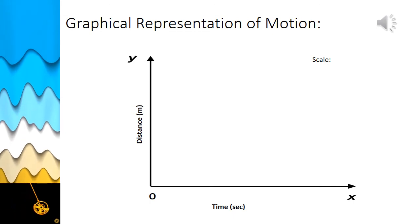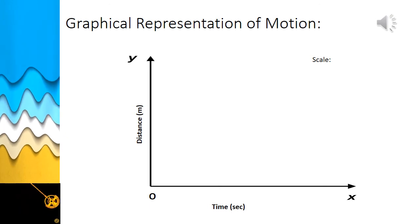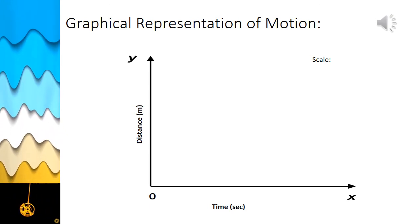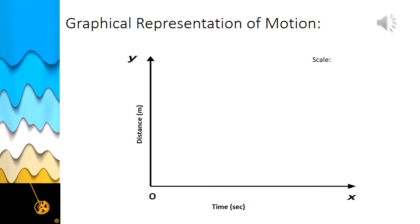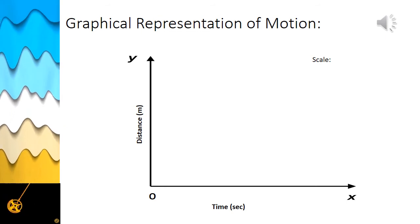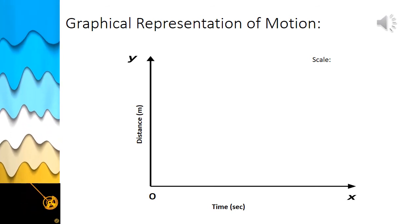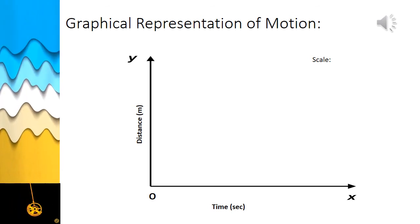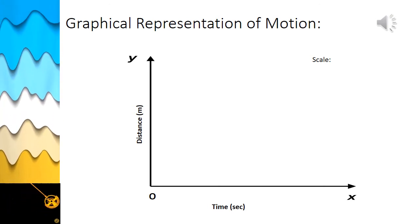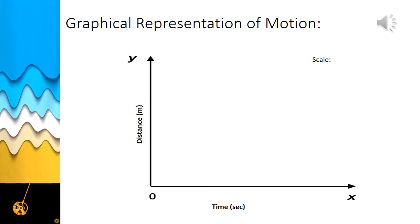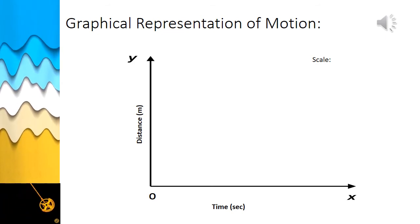Mark the data provided — that is, the distance and time data covered by the object. Then join all the marked points with a pencil. The resulting line is the distance-time graph for the motion of the object. We will see the distance-time graph for uniform motion, non-uniform motion, and the object which is at rest.